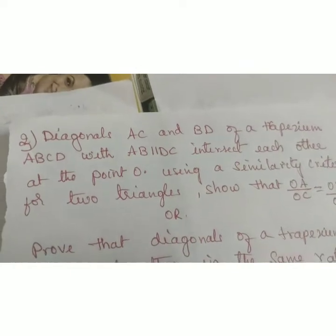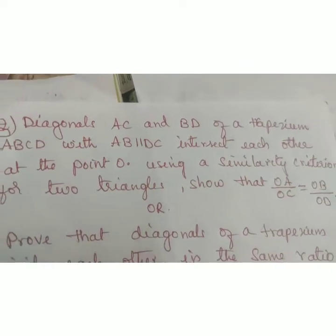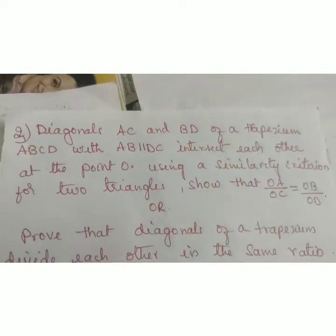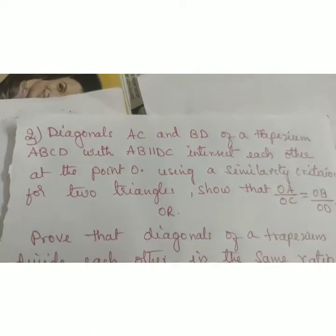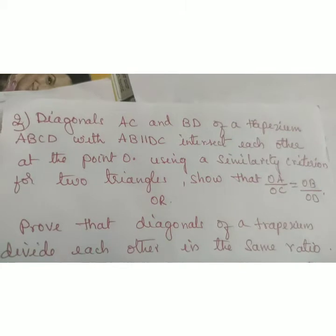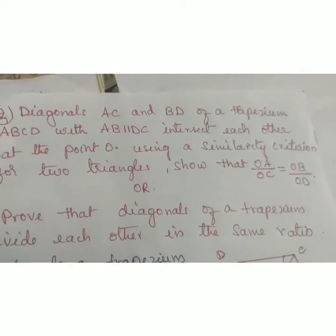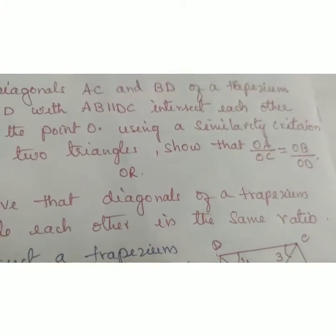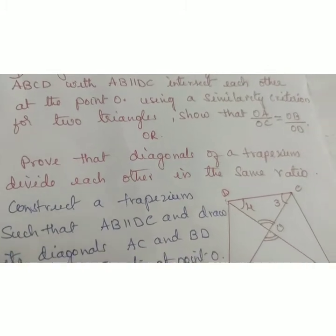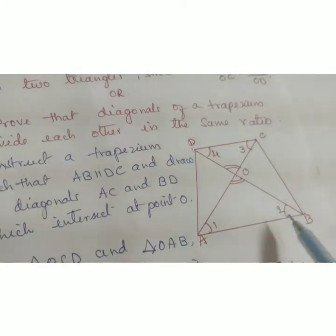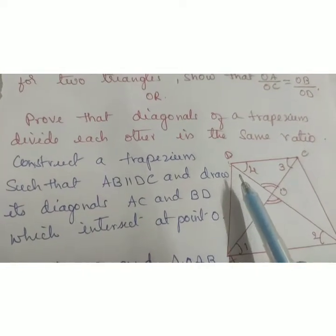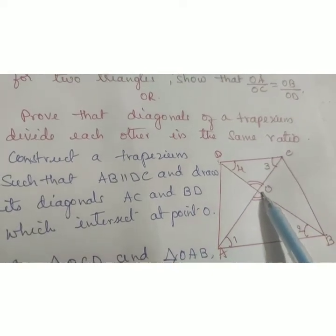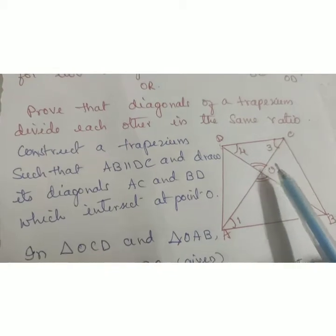Problem number three: diagonals AC and BD of a trapezium ABCD, with AB parallel to CD, intersect each other at point O. Using a similarity criterion for two triangles, show that OA by OC equals OB by OD, or prove that the diagonals of a trapezium divide each other in the same ratio. Here ABCD is the trapezium and AC and BD are the diagonals intersecting at O.